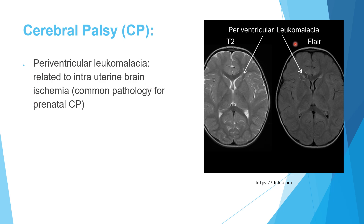One of the common causes of cerebral palsy is intrauterine ischemia, which usually produces what we call periventricular leukomalacia — white matter changes around the ventricles. If you do an MRI for these children you will find white matter changes around the ventricle, which we call periventricular leukomalacia.